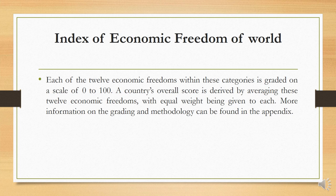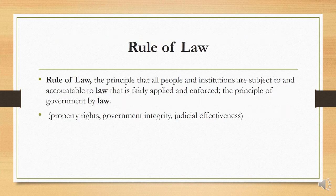The appendix will be provided to you by email. Now we briefly discuss these four categories and their definitions. Rule of Law is the principle that all people and institutions are subject to and accountable to law that is fairly applied and enforced — the principle of government by law. Rule of Law also includes property rights, government integrity, and judicial effectiveness.